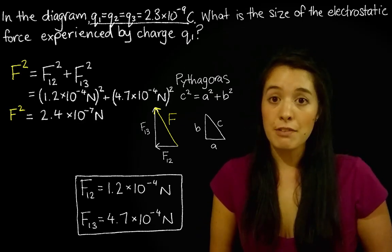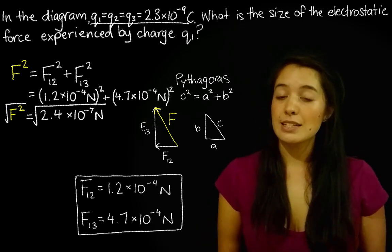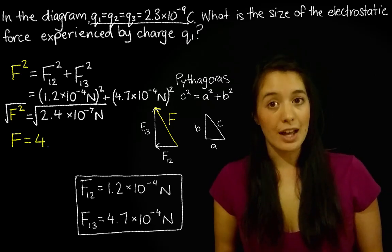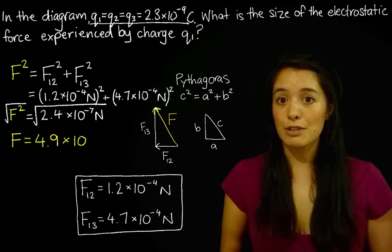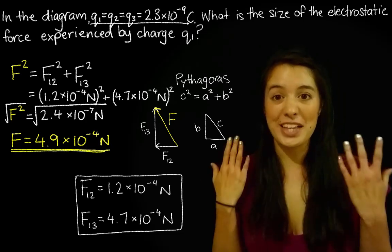And because this F is still squared, we need to take the square root of both sides. So we'll get F is equal to 4.9 times 10 to the negative 4 newtons. And that is the final answer.